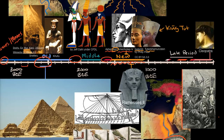The battle is now believed to have been something of a stalemate — Ramses II wasn't able to capture Kadesh — but it has told us a great deal about military tactics, strategy, and formations of that time. Historians today think it may have been the largest chariot battle ever.